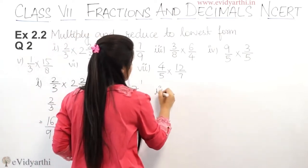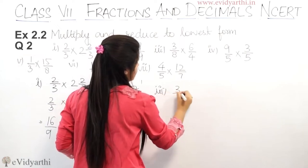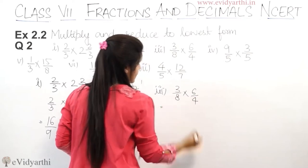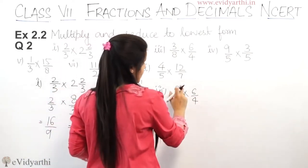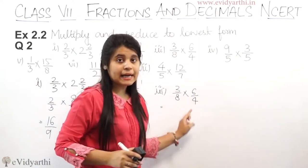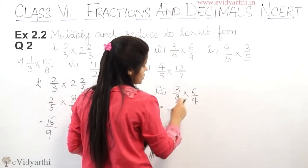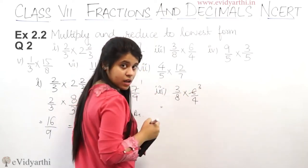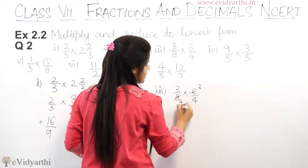Third part means 3 upon 8 into 6 upon 4. Multiply first. You can see here you can cut 6 and 8. So 6 and 8, how do we cut? This is 2 threes are 6 and 2 fours are 8.